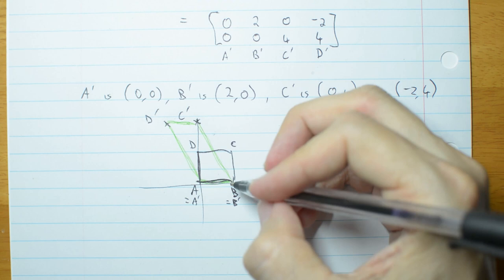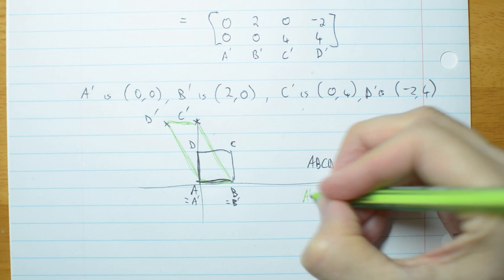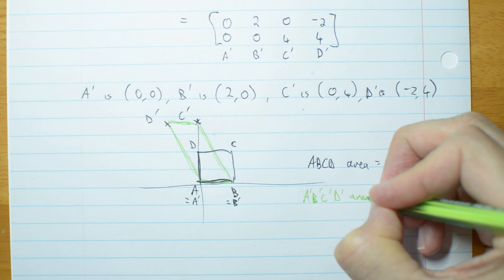What's the area of the new image? A, B, C, D with primes. What's the area of that new shape?